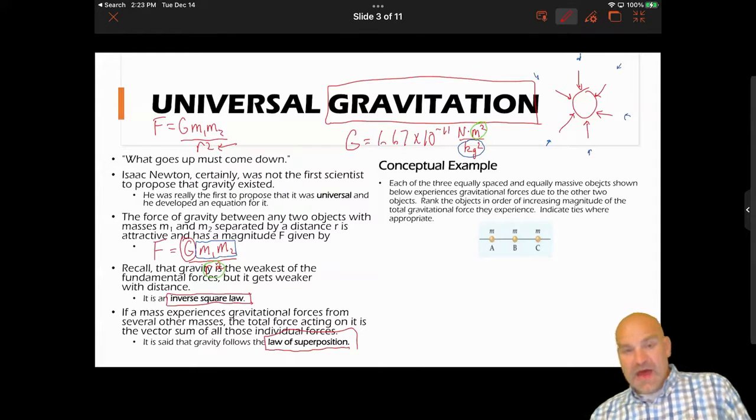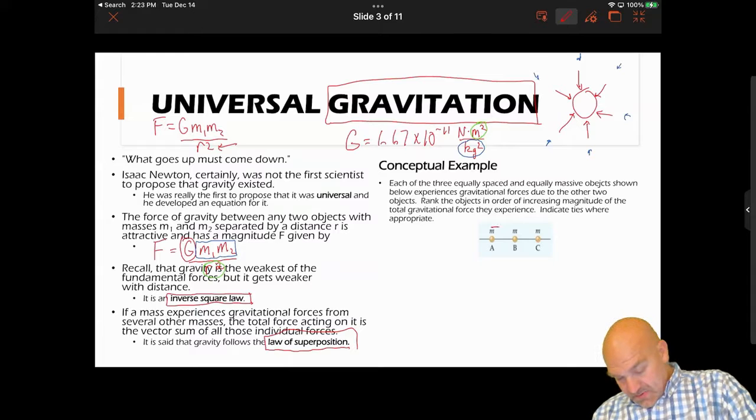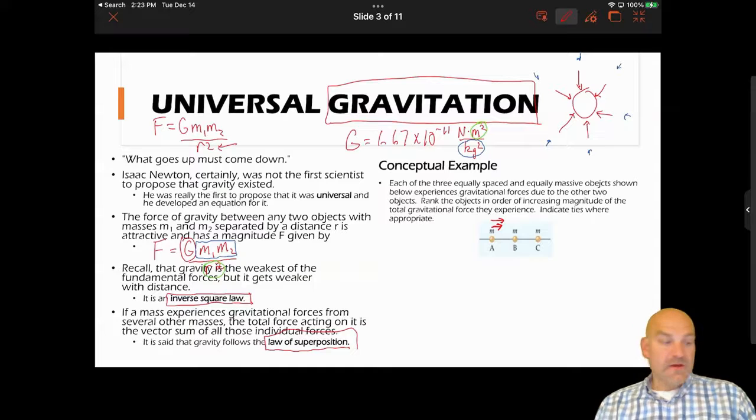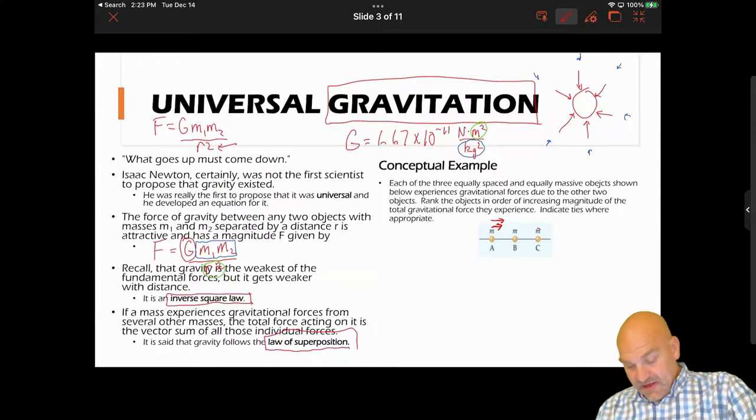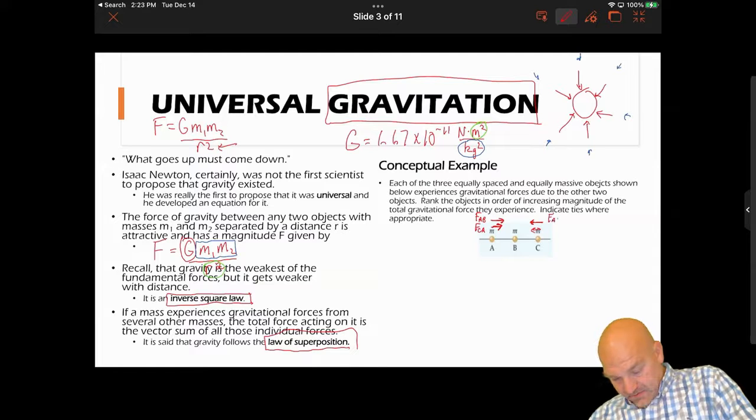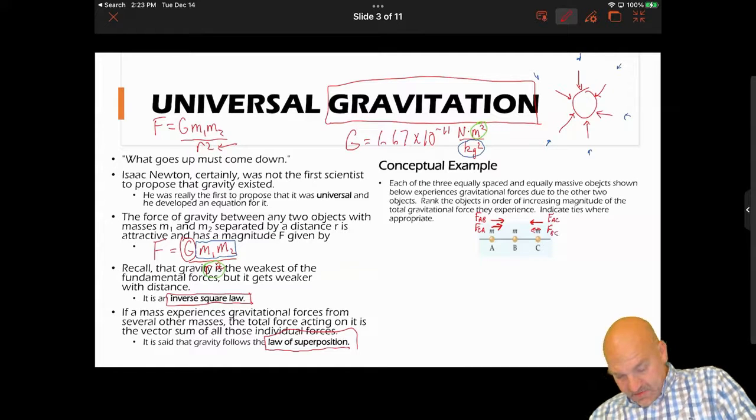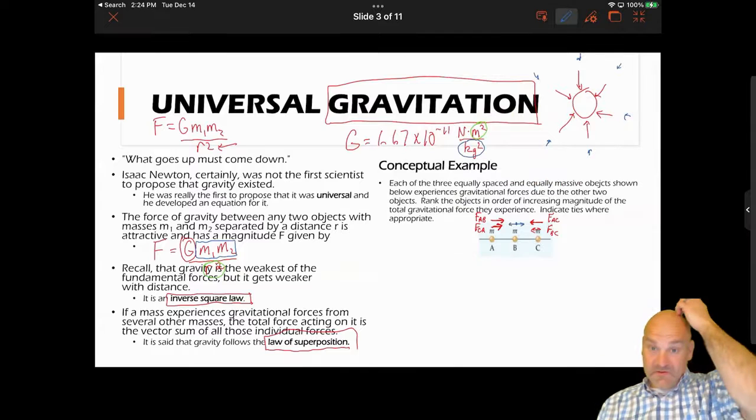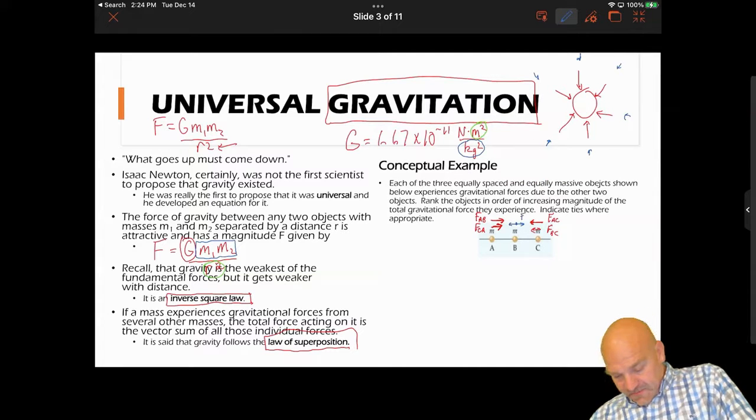The way to think about it: at position A, A is going to be pulled towards B and it's going to be pulled towards C. At C, it's going to be pulled towards B and it's also going to be pulled towards A. So this is like F of A, B on A, F of C on A. Here's A on C and then here's B on C. But something to note is that B is going to have, because of Newton's third law, these equal but opposites.